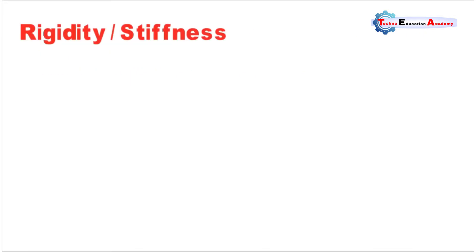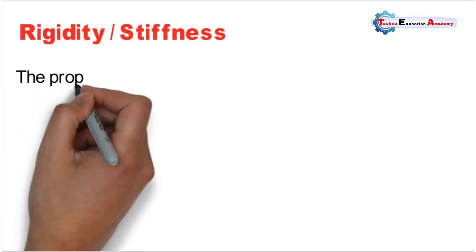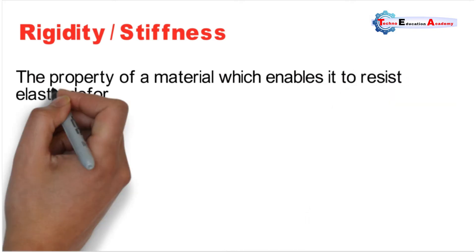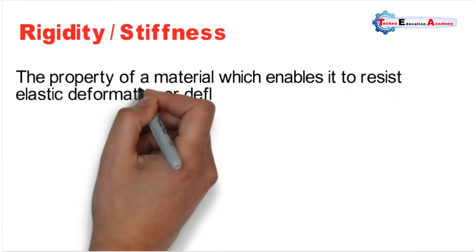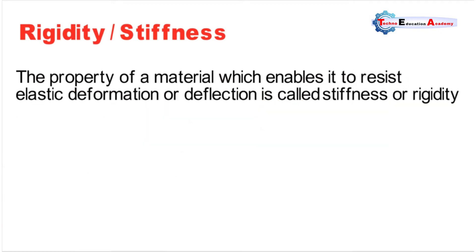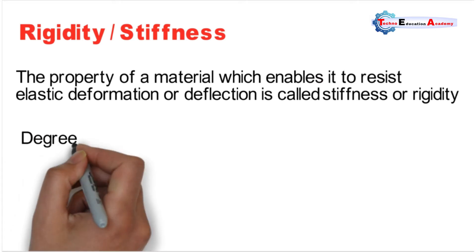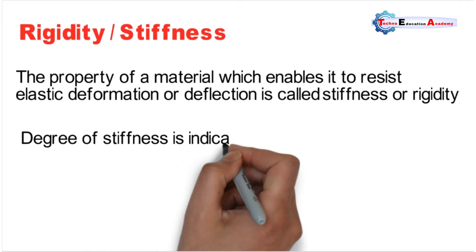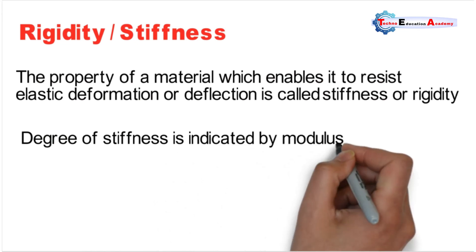The next property is rigidity or stiffness. The property of a material which enables it to resist elastic deformation or deflection is called stiffness or rigidity. The degree of stiffness is indicated by the modulus of rigidity, denoted by G, in the case of shear load. Different materials have different values of Young's modulus E and rigidity G.